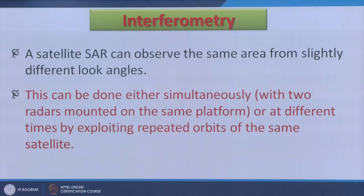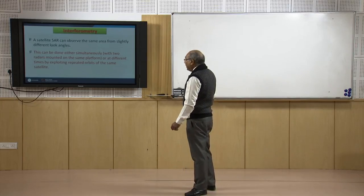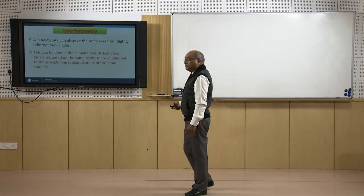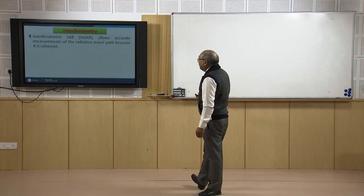Interferometry can either be done simultaneously — as was done in the SRTM (Shuttle Radar Topographic Mission), where a long pole was put on the spacecraft to look at the same area from two different angles to create a digital elevation model — or at different times by exploiting repetitive orbits of the same satellite for change detection. InSAR allows accurate measurements of radiation travel path because of its coherence, and coherence is very much required for change detection using radar remote sensing.